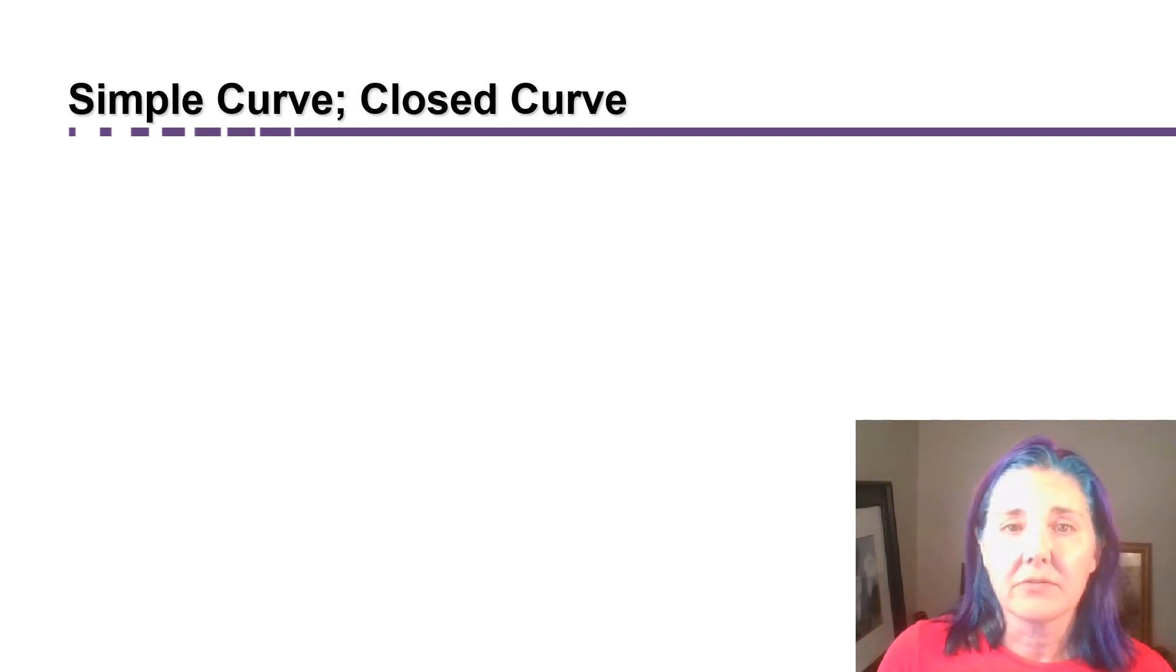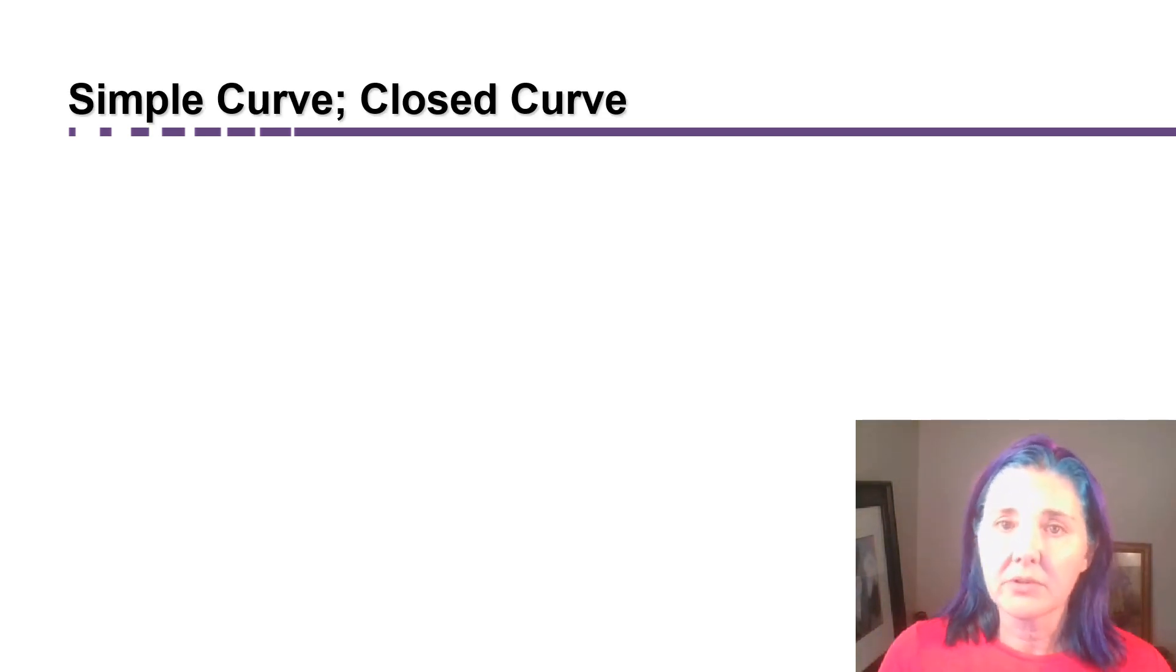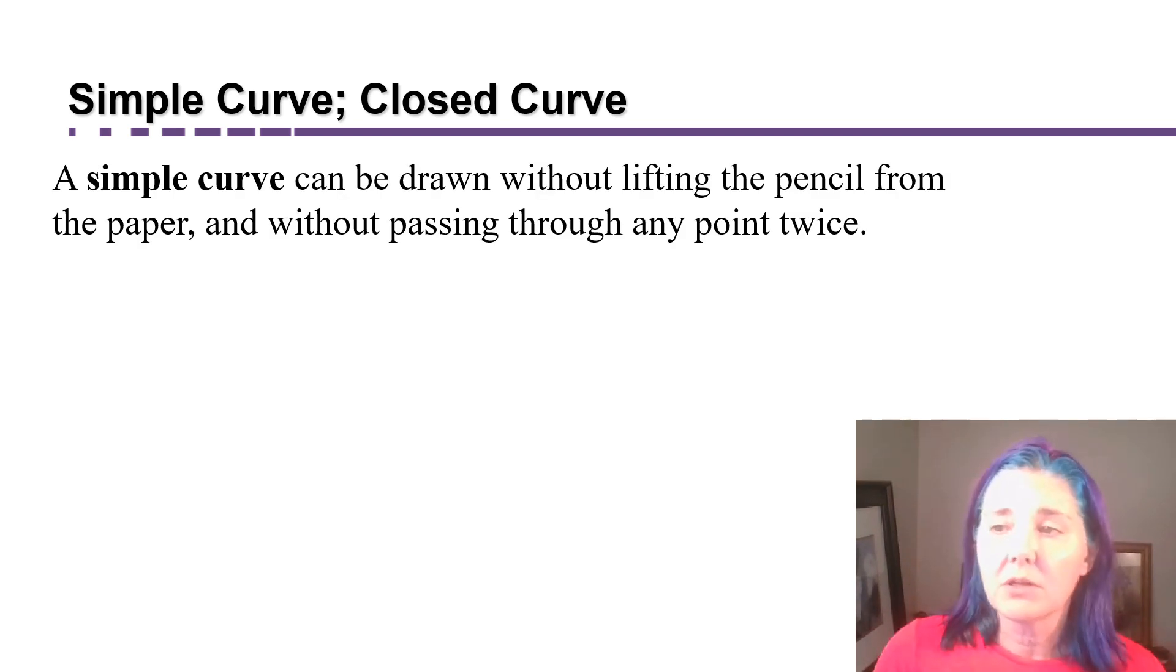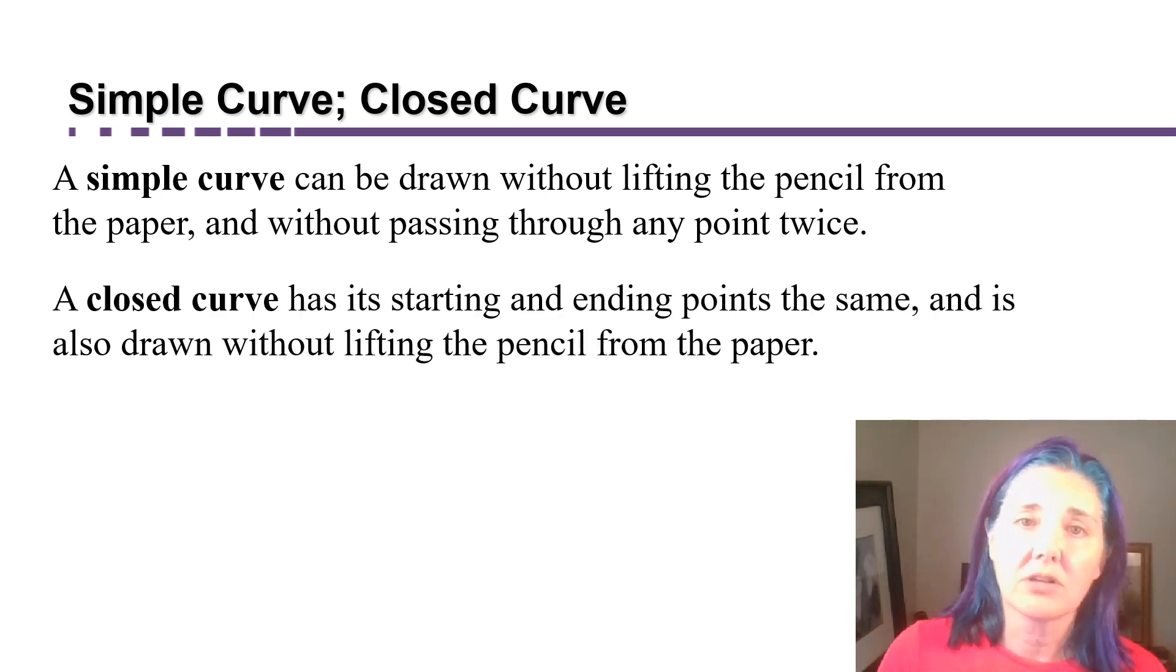The way we categorize curves are simple or not simple, closed or not closed. A simple curve can be drawn without lifting your pencil from the paper, and it never passes through a single point twice. A closed curve has its starting and ending points in the same position, like a loop, and it also can be drawn without lifting your pencil from the paper.